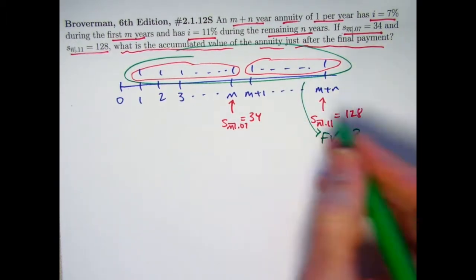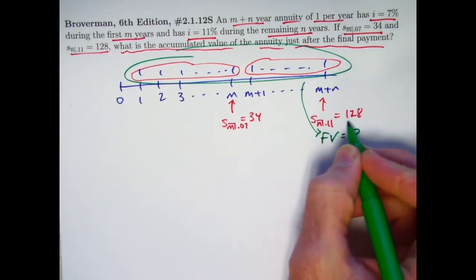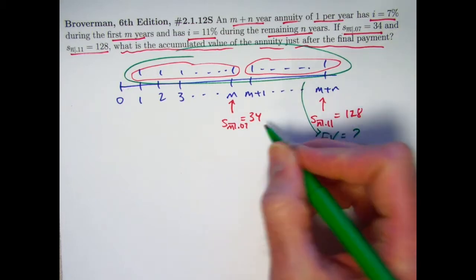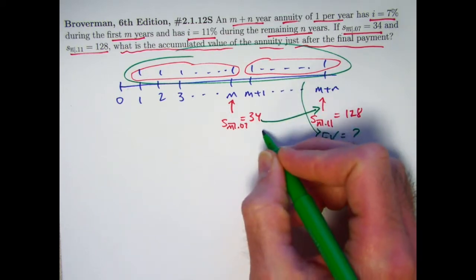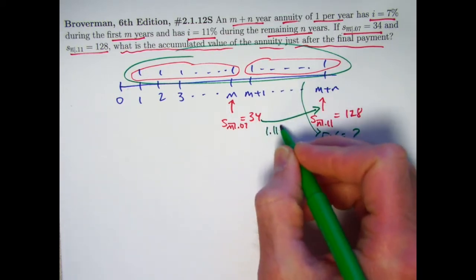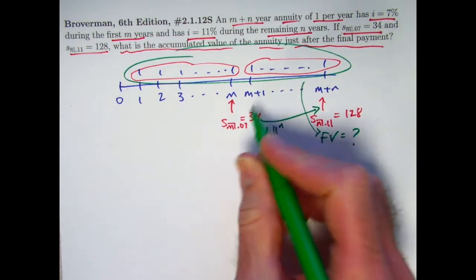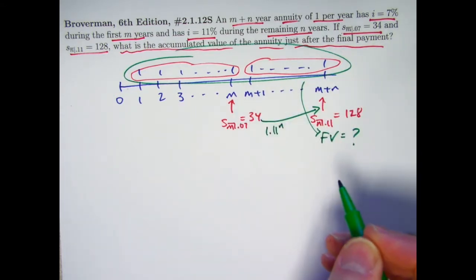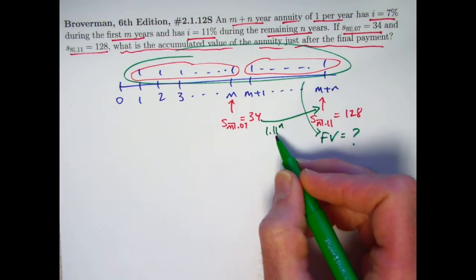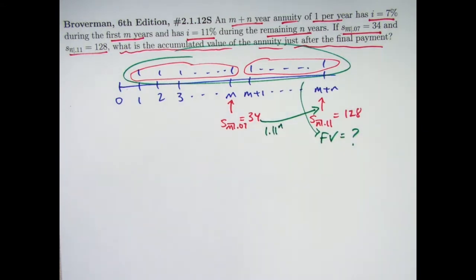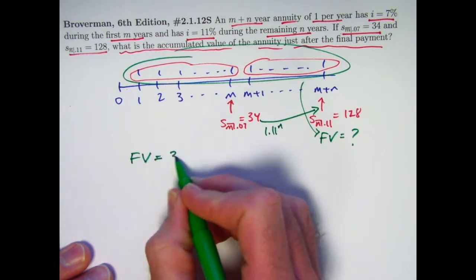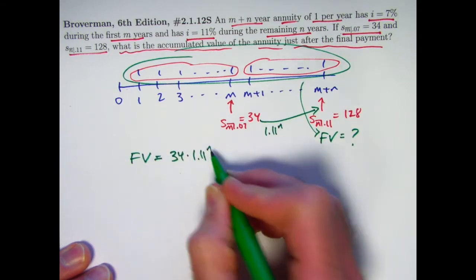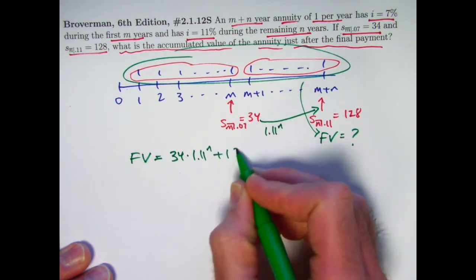Well, you think about it logically here, it should be what we would get if we take this 128 and add on 34 promoted in time by N years to time M plus N by multiplying 34 by 1.11 to the N power, because that 11% interest rate is valid over the last N years. And yeah, it is N years, so we need to raise it to the N power. The answer can be written FV equals 34 times 1.11 to the N power plus 128.